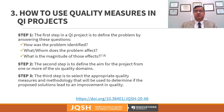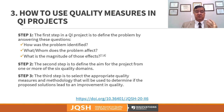How to use quality measures in QI projects: Step one is to define the problem by answering — how was the problem identified, who or what does the problem affect, and what is the magnitude of these effects? Step two is to define the aim of the project from one or more of the six quality domains — what are you aiming to do to address this problem?